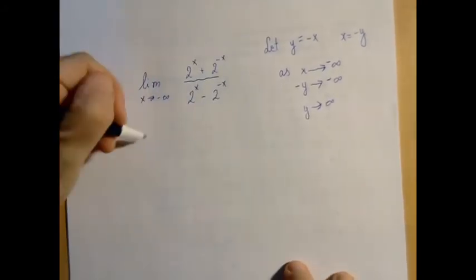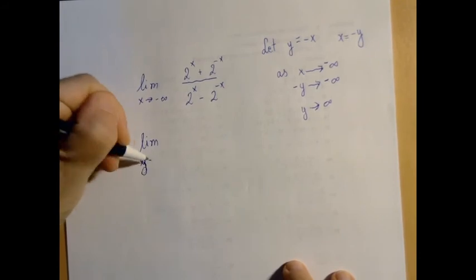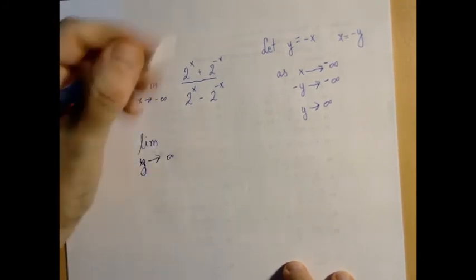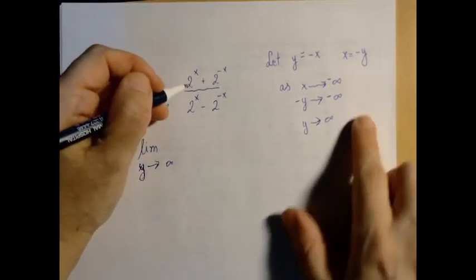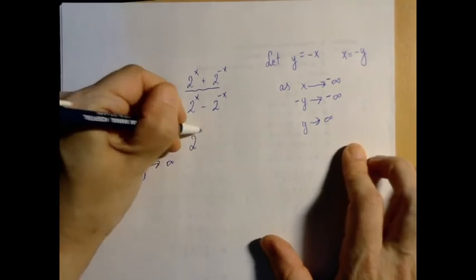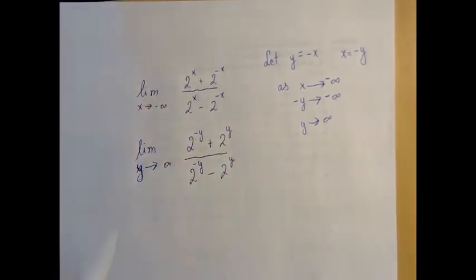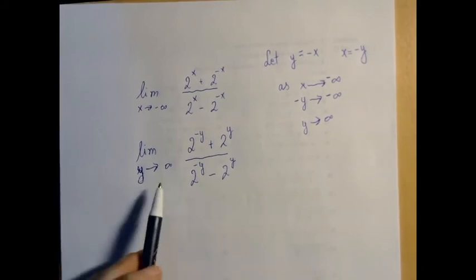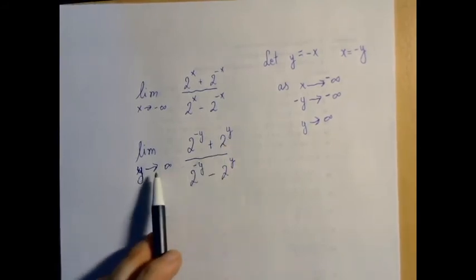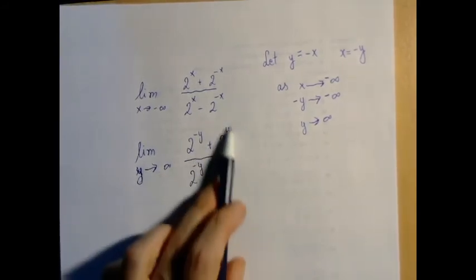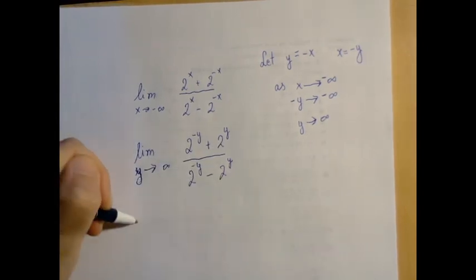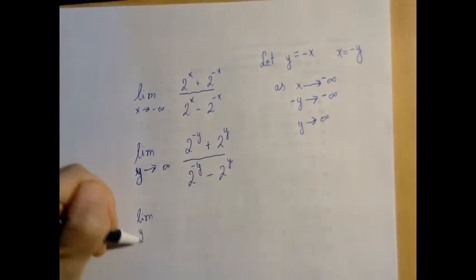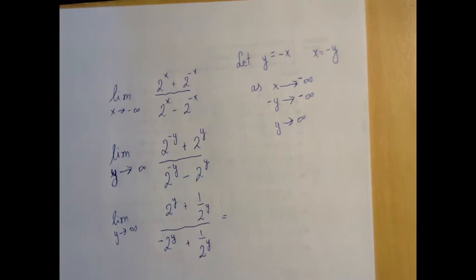So then what we have is the limit as y approaches plus infinity. X is negative y. So we have 2 to the negative y plus 2 to the y divided by 2 to the negative y minus 2 to the y. And now you see we sort of got rid of the double negative. Now what looks positive is positive. And this is the big part, this is the small part. So we're going to rearrange it a little bit.